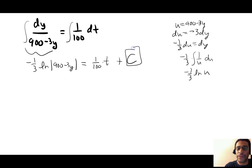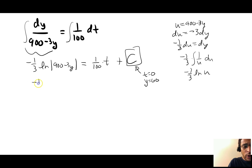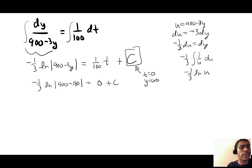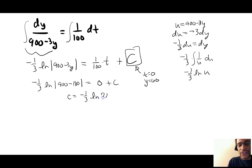As soon as C appears, we solve for it using the initial condition t = 0, Y = 60. Plugging in: −(1/3) ln(900 − 180) = 0 + C. That gives 900 − 180 = 720, so C = −(1/3) ln(720).